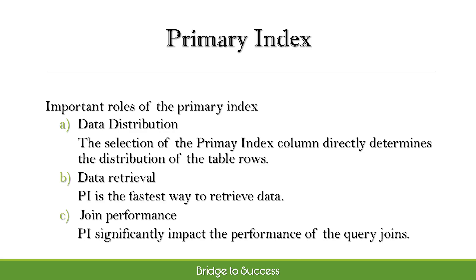Second, data retrieval: PI is the fastest way to retrieve data. As data is distributed according to the primary index, it will always be a 1AMP operation. Third, join performance: PI can significantly impact the performance of query joins.